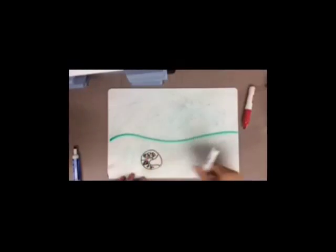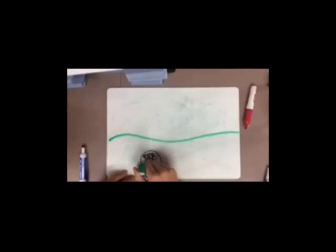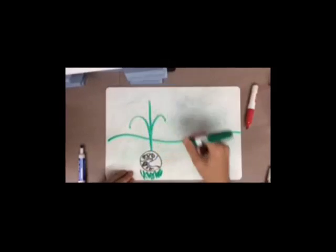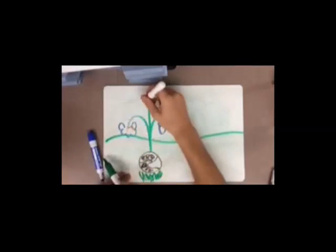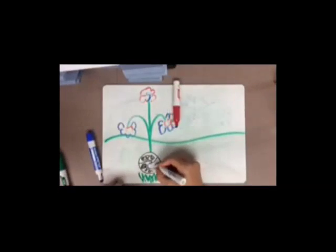A corm is a short swollen underground plant stem that is used as food storage like a crocus. Corms usually have at least one growing point. Corms are storage organs used by some plants to survive winter or summer droughts.